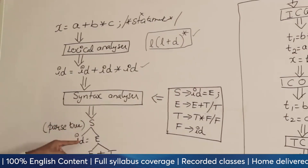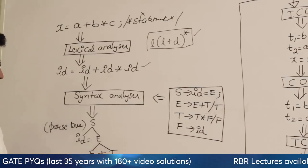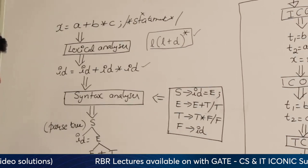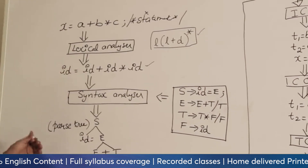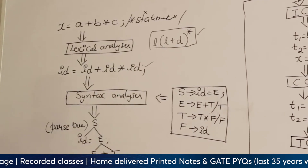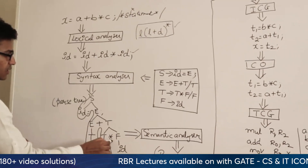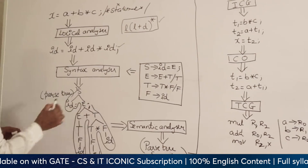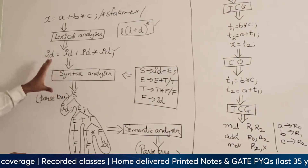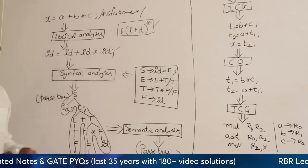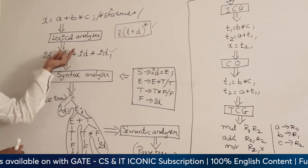The parse tree starts with the start symbol S. A statement is identifier equals expression; an expression is expression plus term; a term is term times factor; a factor can be an identifier. Finally, we get a parse tree in which we can see the entire stream of tokens. The stream of tokens is: id, =, id, +, id, *, id, followed by semicolon. You have to verify that the yield of the parse tree and the input to the syntax analyzer are the same. If they match, the input is according to the format. Otherwise, there is a syntax error — syntax errors are detected at the syntax analyzer if the input does not match the given grammar.